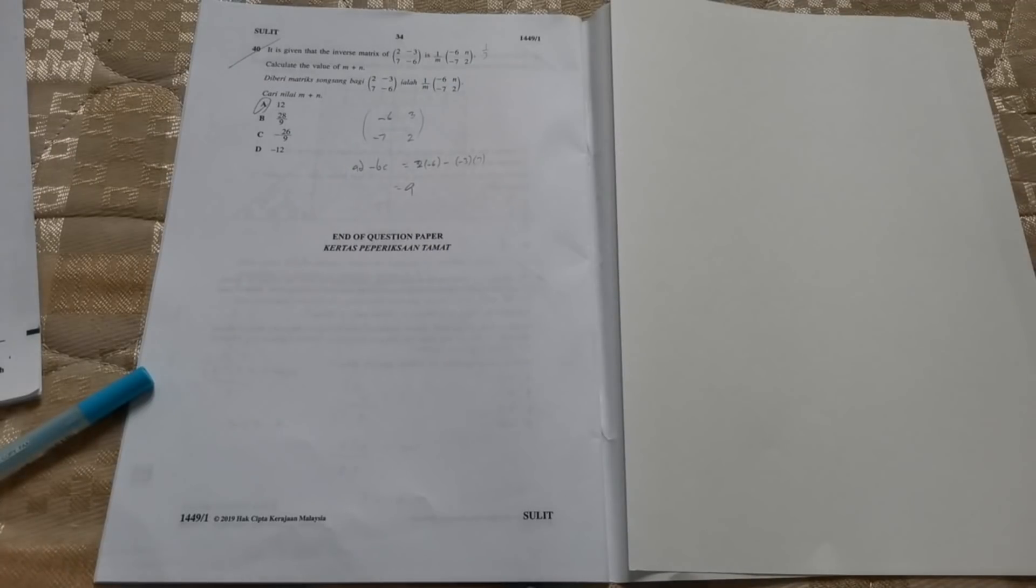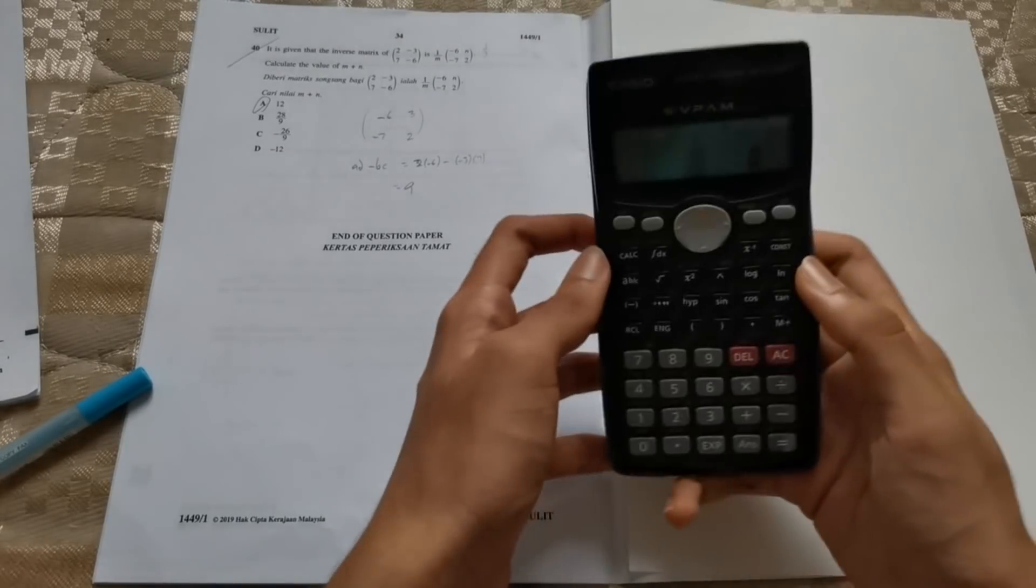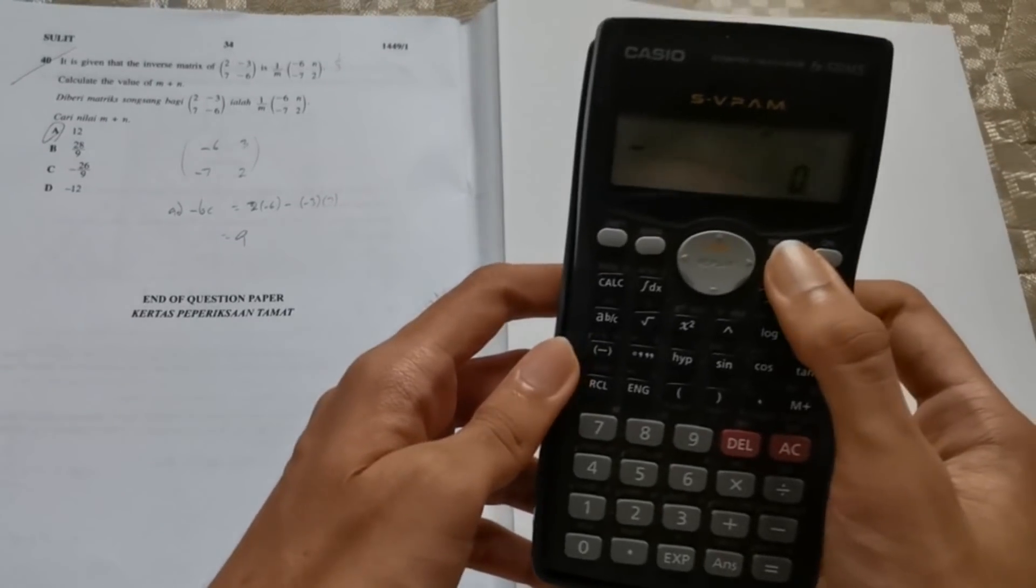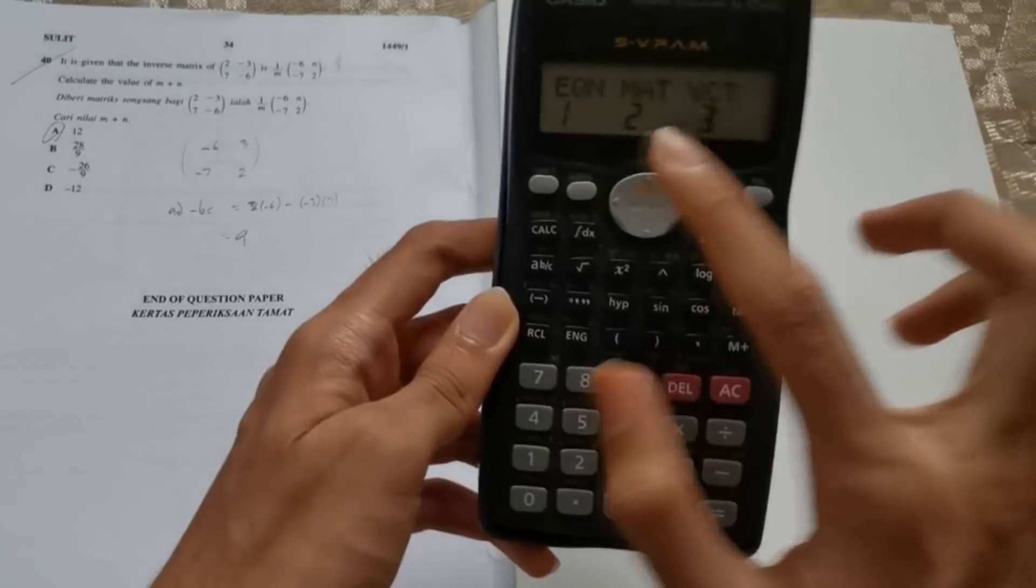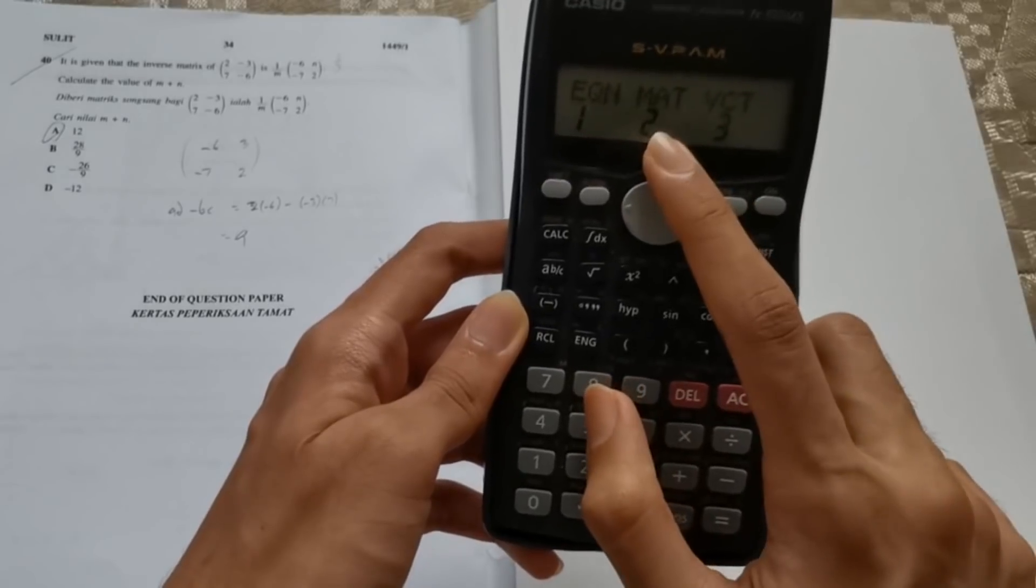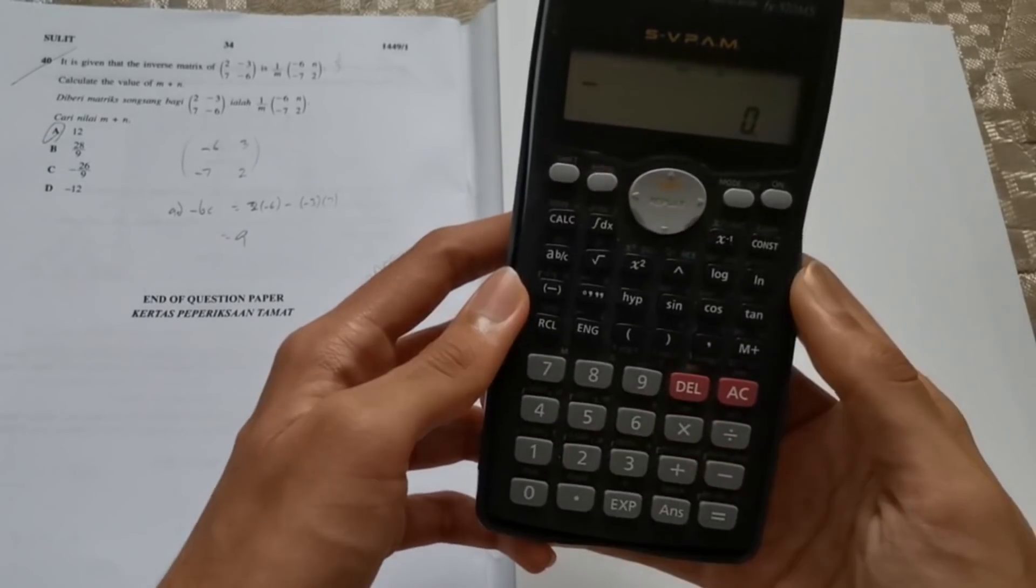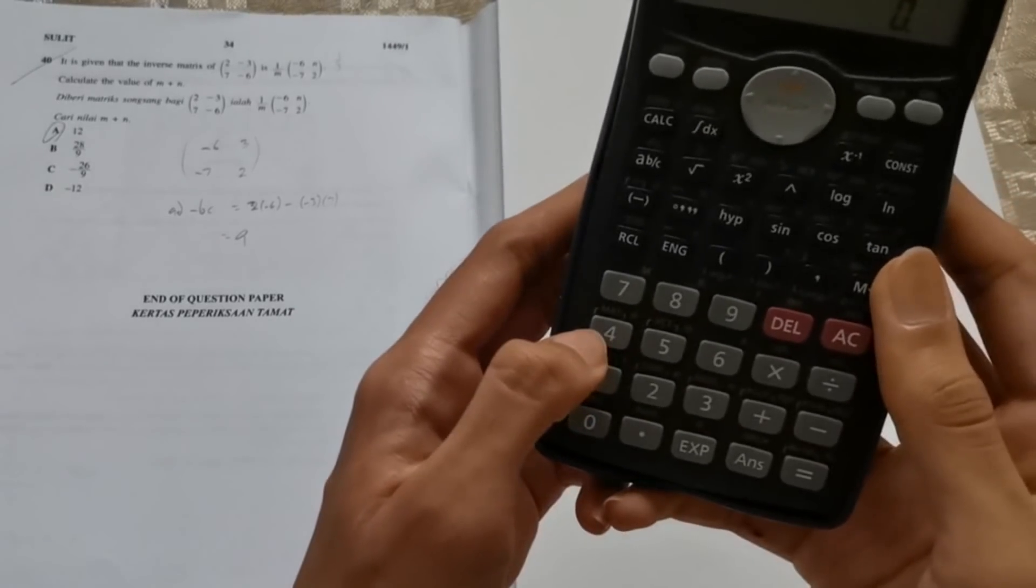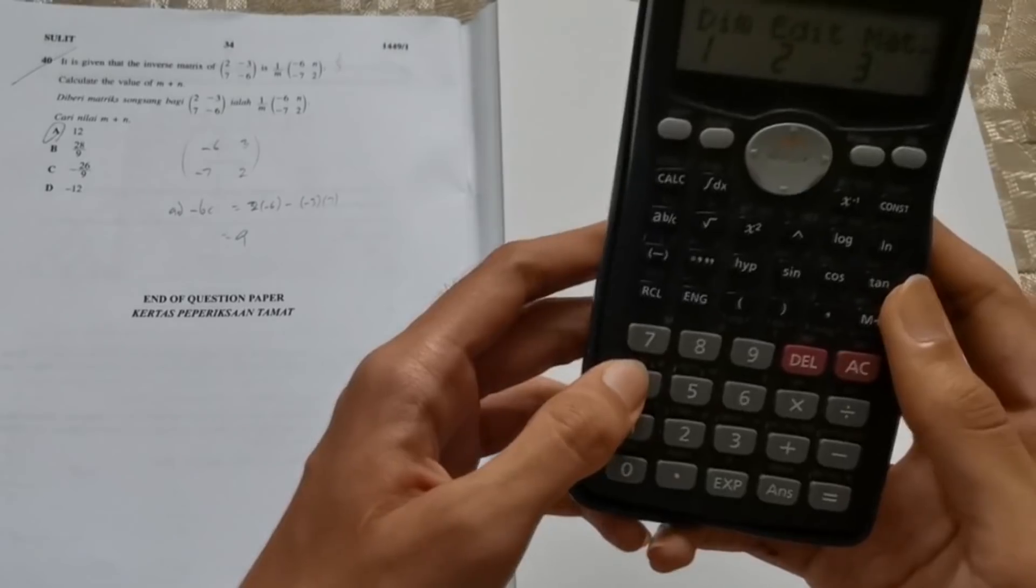Last but not least for paper 1 is matrix question. I'm going to teach you how to solve this question using the calculator. For example, this question right here for inverse matrix, all you have to do is press mode 3 times, and you will get the mat option. Mat is basically matrix. So you press 2 and you'll be in the matrix mode.